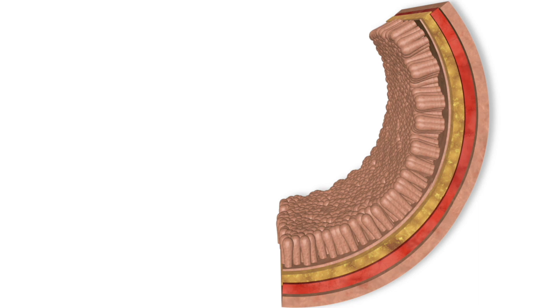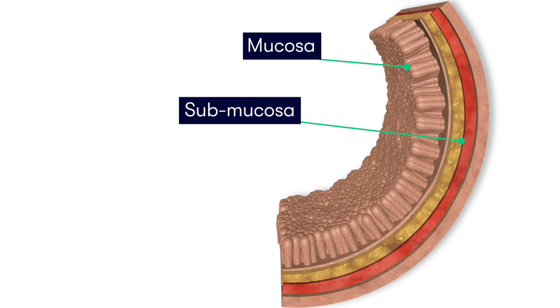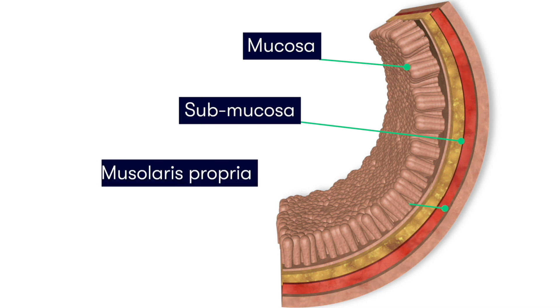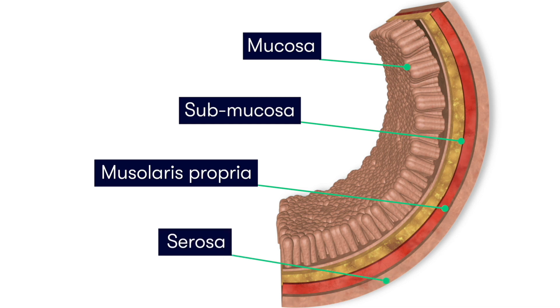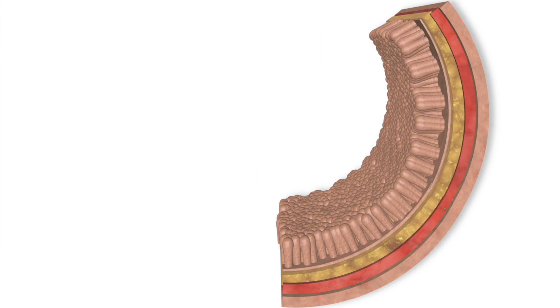Taking a closer look at the bowel wall, you can appreciate four distinct layers. The innermost bowel layer is the mucosa, then moving outwards we have the submucosa, then the muscularis propria layer, and finally the outermost layer, which is the serosa.